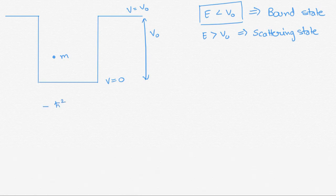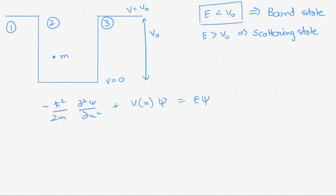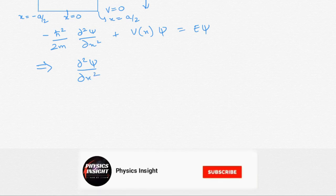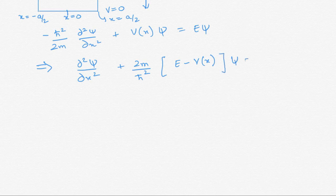Let's start with the Schrödinger equation: −ℏ²/(2m) · d²ψ/dx² + V(x)ψ = Eψ. We name the three regions as 1, 2, and 3, with x = −a/2 as the left boundary and x = a/2 as the right boundary. This equation can also be written as d²ψ/dx² + (2m/ℏ²)(E − V(x))ψ = 0.